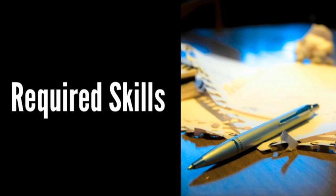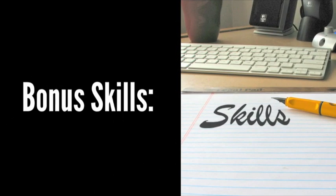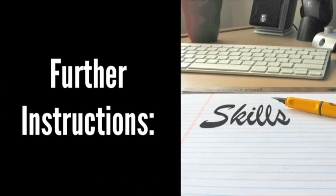Next, list out the required skills for the position. Go back to the list you made in Step 2 and list the top 3 to 5 skills that the candidate must possess to even be considered for the job. After that, list out the bonus skills — things from Step 2 which are not required but would be a nice bonus if the candidate possessed them. Finally, add the further instructions section: let them know how you would like them to apply. A tip from Brad Ferris is to ask for a cover letter which addresses some specific point — this makes filtering through the stack of resumes easier, as you can immediately discard those who did not address that point.